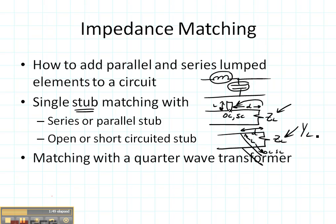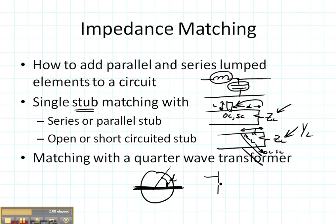The last thing we talked about was how to match a complex load with a quarter wave transformer. Basically, you take your load, whatever it happens to be, and rotate it towards the generator a distance D until it gets to the real axis. That allows you to put a quarter wave transformer in line with your complex load, as long as you place a transmission line of length D between your load and your quarter wave transformer.